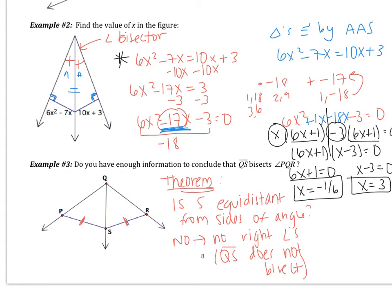The second way to think about the problem: are my triangles congruent? I have one pair of sides marked congruent, and the middle side is congruent to itself by the reflexive property. That's SS — that's not a congruency theorem. So the triangles are not congruent, meaning this is not the bisector. Either use the theorem or the congruent triangles way — whichever you prefer.